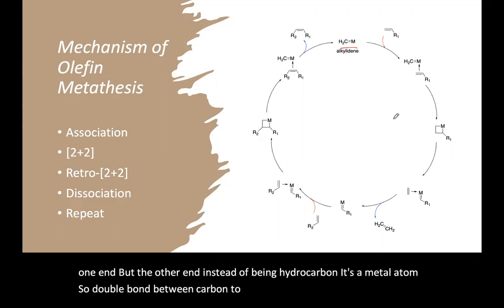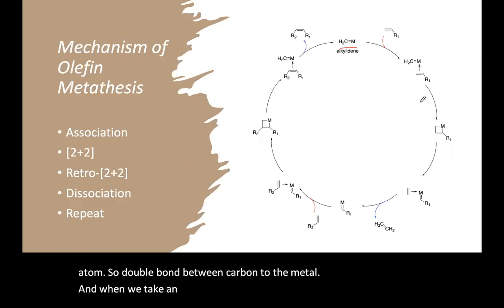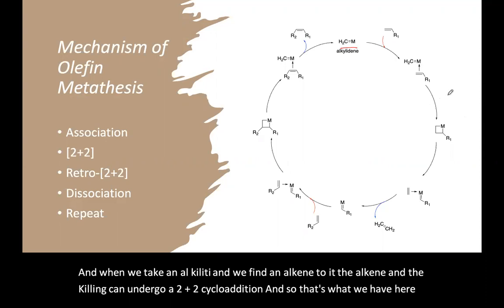And when we take an alkylidene and we bind an alkene to it, the alkene and the alkylidene can undergo a [2+2] cycloaddition. So that's what we have here. We have the product of a [2+2] cycloaddition.